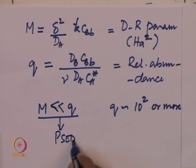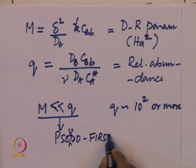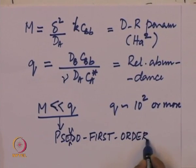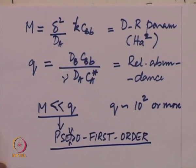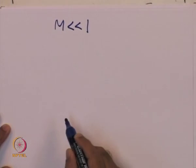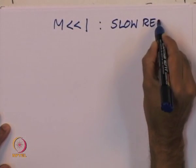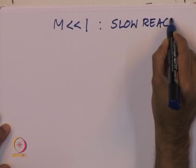Under these conditions, the concentration profile of B is flat and does not need to be considered. These qualify to be called pseudo first-order cases. Within that, we made a further assumption that M is not only much less than Q but much less than 1. These belong to the slow reaction regime.